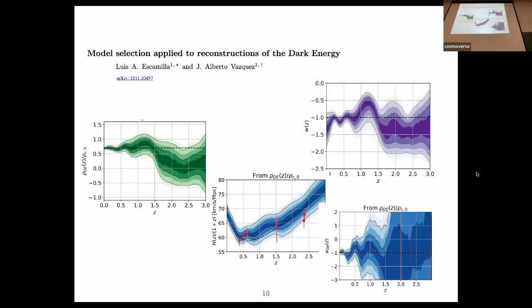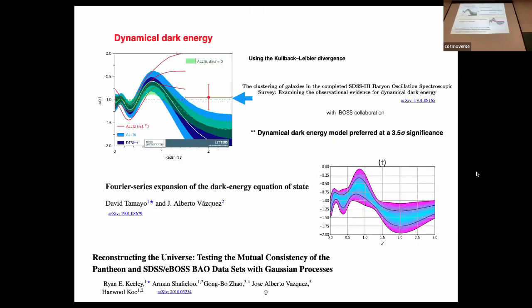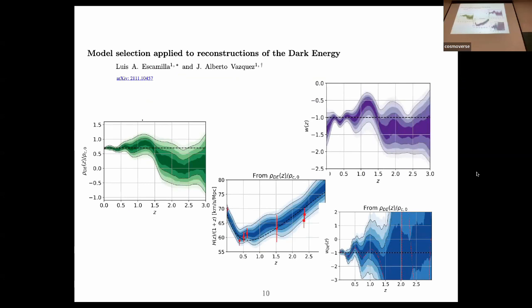More recently, we applied a similar technique to constrain the equation of state, but we decided to focus on the dark energy density. This equation of state looks very similar to the previous ones. We use principal component analysis to decide which parameters provide the most information, so we don't randomly select parameters. This is the reconstruction of the dark energy density, and you can see a particular wiggly behavior.